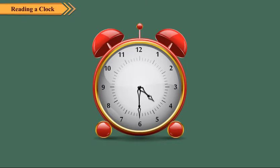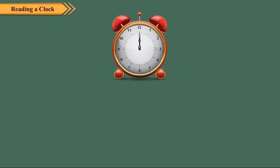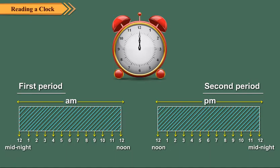In the commonly used 12-hour clock system, the day is divided into two 12-hour periods. The first period is from 12 midnight to 12 noon and is denoted as AM. The second period is from 12 noon to 12 midnight and is denoted as PM. The 12-hour clock system can create confusion if we do not write AM or PM with the morning or evening time.